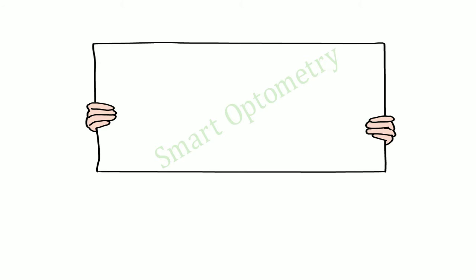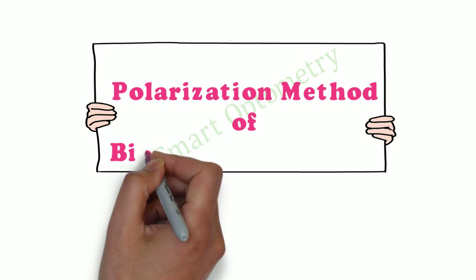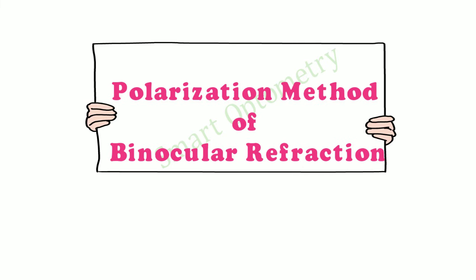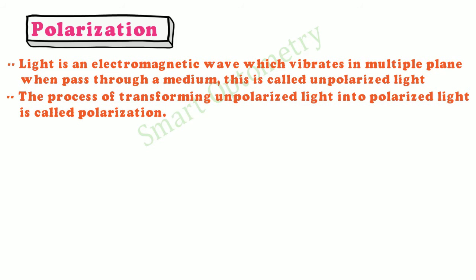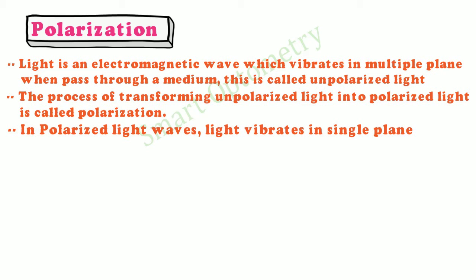In this video I will discuss about polarization method of binocular refraction. Before starting, we need to know about what is polarization. Light is an electromagnetic wave which vibrates in multiple planes when passed through a medium — this is called unpolarized light. The process of transforming unpolarized light into polarized light is called polarization.